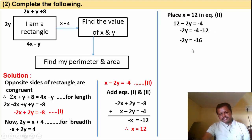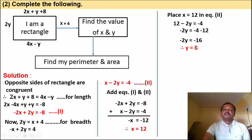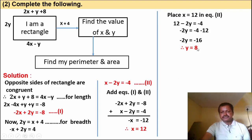Simplifying: y equals minus 16 divided by minus 2, so y is equal to 8. Therefore x is equal to 12 and y is equal to 8.